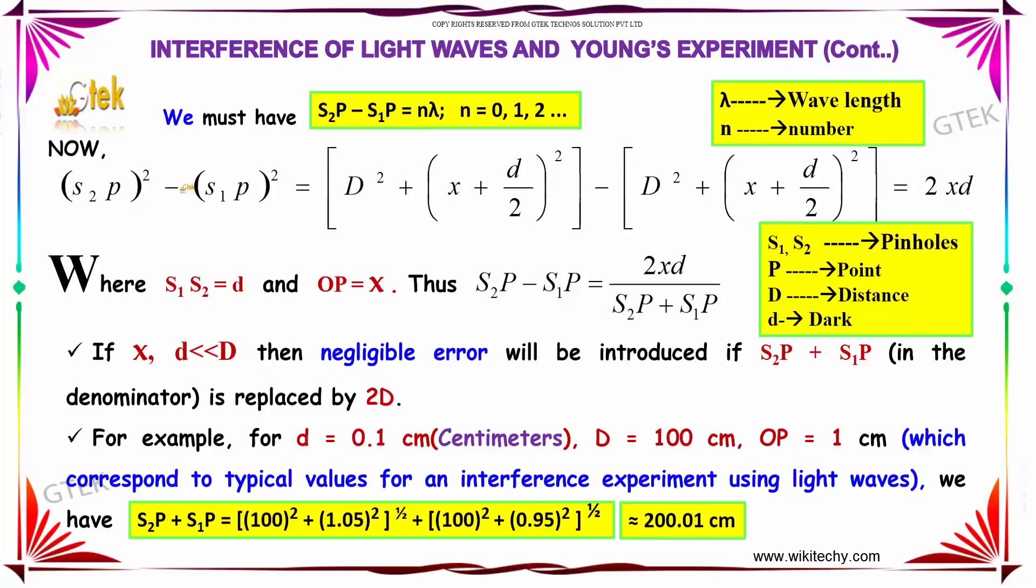Obviously, squaring each, we are getting S2P whole square minus S1P whole square is equal to D square plus X plus D by 2 whole square minus D square plus X minus D by 2 whole square, which is given as 2 into XD,